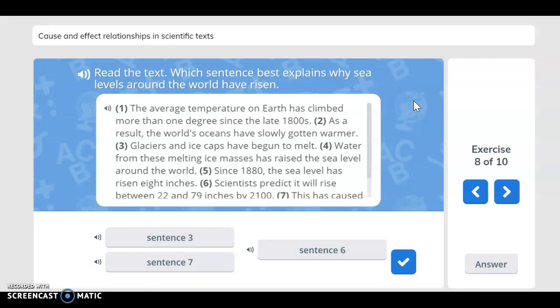Five, since 1880, the sea level has risen 8 inches. Six, scientists predict it will rise between 22 and 79 inches by 2100. Seven, this has caused some concern among scientists. You said sentence three? You are correct.